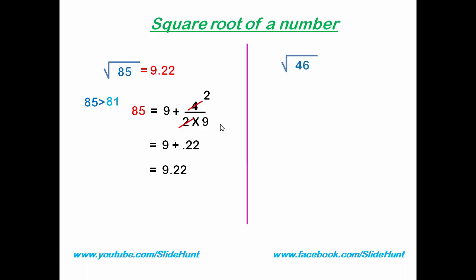The nearest perfect square number is 49. Square root of 49 is 7, so we write 7 here. Now see, 46 is less than 49, so the square root of 46 will be less than 7. We need to subtract some number from 7. What do we subtract? Find out the difference between 49 and 46, that is 3.